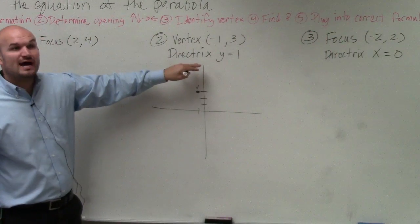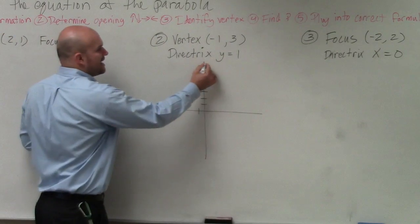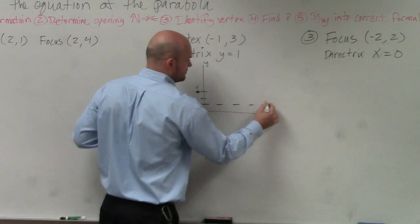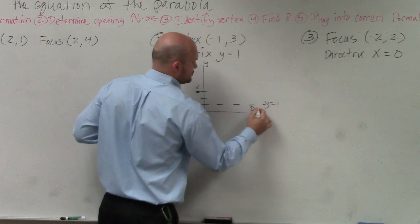The directrix is y equals 1. Well, here's the y-axis. So y is equal to 1, that's right there. So therefore, that's a horizontal line. That's my directrix.